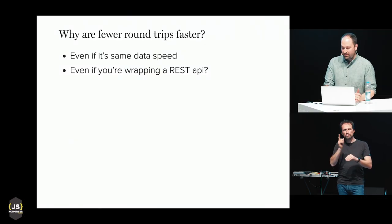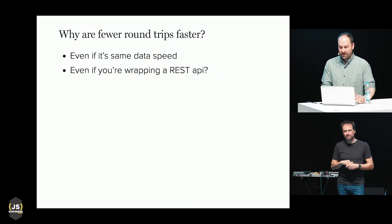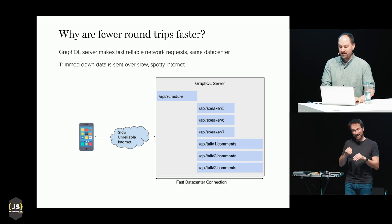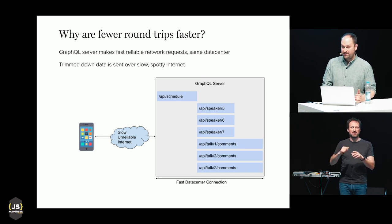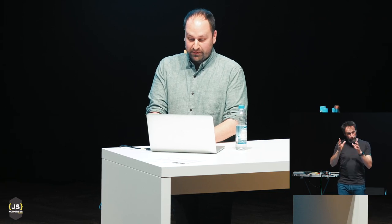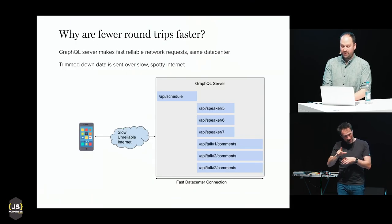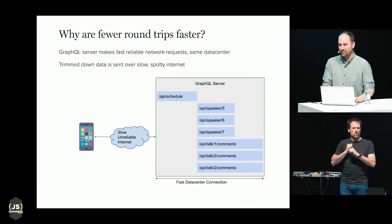Do you get any performance benefits by writing a GraphQL server if all it's doing is wrapping the same REST API? Yes — you're still making all the same requests, but they'll be faster because those round trips are happening over a fast data center connection, maybe even on the same physical server. And if REST endpoints return additional data that wasn't requested by GraphQL, it gets trimmed down to the slim GraphQL response — that single, small, efficient payload is what gets sent over the slow, unreliable public internet.